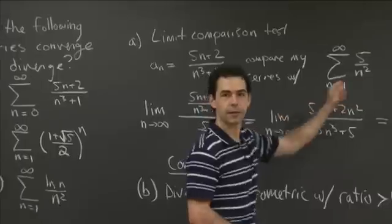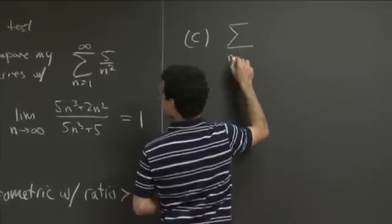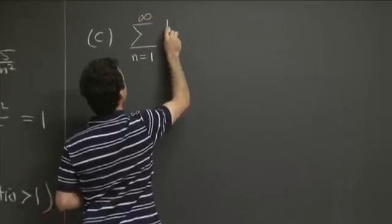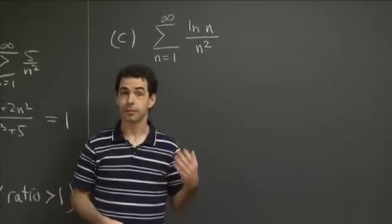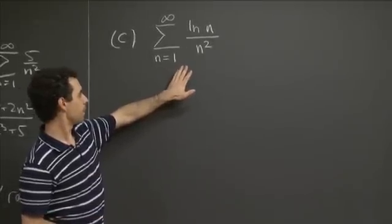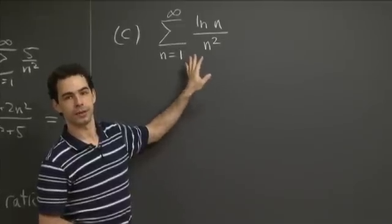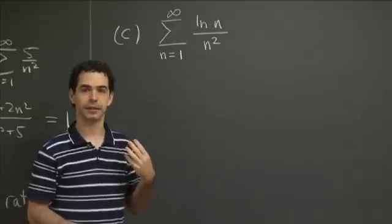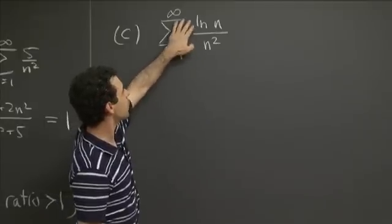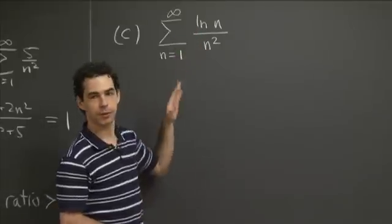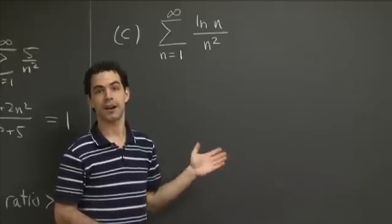Finally, part C asks about the sum for n equals 1 to infinity of log n over n squared. This one is a little trickier and requires more thought. It can't be solved by a straightforward application of the limit comparison test.